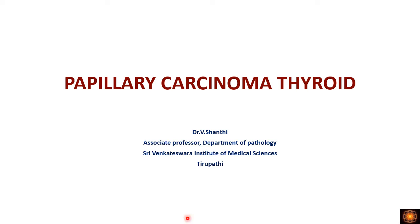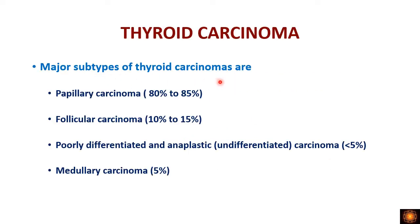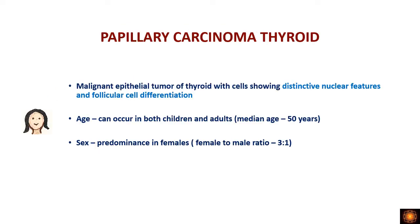Welcome to Pathology Insights. Today we will be discussing papillary carcinoma of the thyroid. We have four major subtypes of thyroid carcinomas: papillary carcinoma, follicular carcinoma, poorly differentiated and anaplastic carcinoma, and medullary carcinoma. Out of all four major subtypes, papillary carcinoma is the most common, followed by follicular carcinoma, then medullary carcinoma, and then poorly differentiated and anaplastic carcinomas.